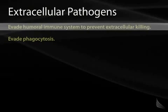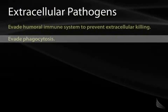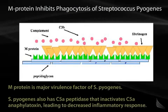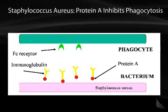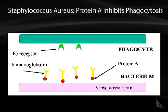Extracellular pathogens invade the humoral immune system to prevent extracellular killing and evade phagocytosis. The M protein inhibits phagocytosis of Strep pyogenes by binding fibrinogen on the cell surface. Strep pyogenes also has a C5A peptidase that inactivates the C5A anaphylatoxin, leading to decreased inflammatory response. Staphylococcus aureus has protein A, which binds to the Fc portion of immunoglobulin and inhibits phagocytosis, since phagocytes looking for Fc receptors find them all bound by the staph aureus.